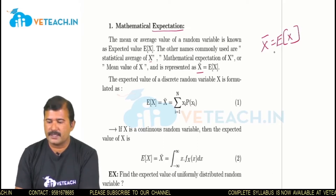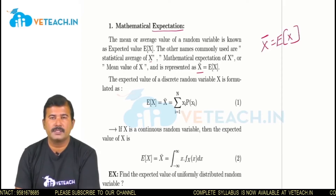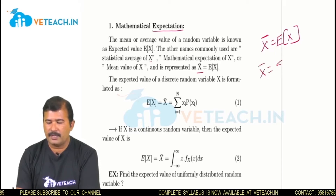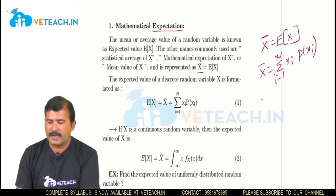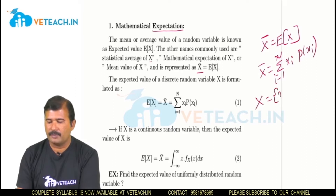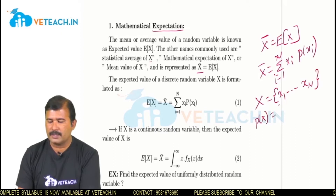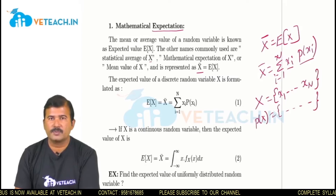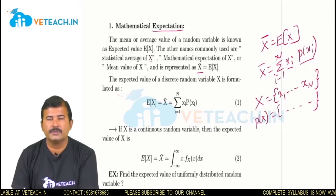The expected value is related to a random variable — that means it is the average when a random variable is involved, and it includes probabilities. The average value can be evaluated as sigma i equals 1 to n of x_i into probability of x_i. That means if the random variable consists of n values x_1 to x_n with corresponding probabilities, the summation of each value times its probability gives the average value.